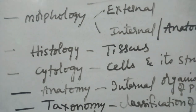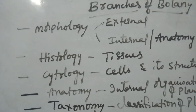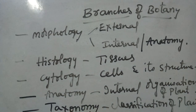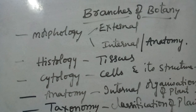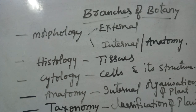First we have to identify a plant. Next, we have to name the plant — that is nomenclature. And then we have to classify that plant. So identification, nomenclature, and classification all come under taxonomy.